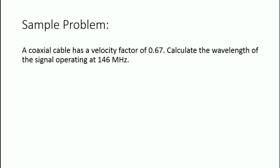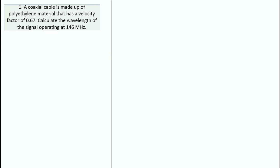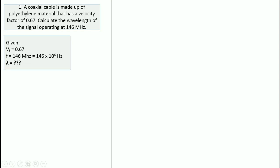For the last part, we will solve a problem. The problem is: a coaxial cable has a velocity factor of 0.67. Calculate the wavelength of the signal operating at 146 MHz. This is not a problem where you directly substitute values into the formula. Let's list the given parameters: velocity factor equals 0.67, frequency equals 146 MHz or 146 times 10 raised to 6 Hz. We are looking for the wavelength of the signal operating at this frequency.